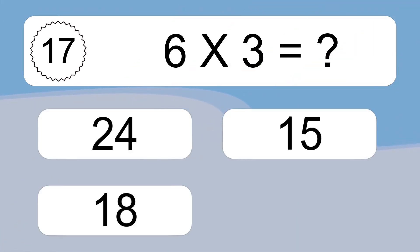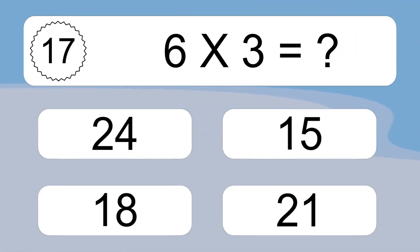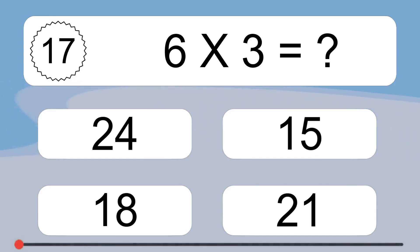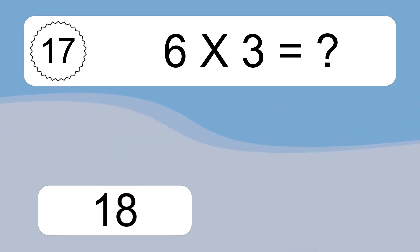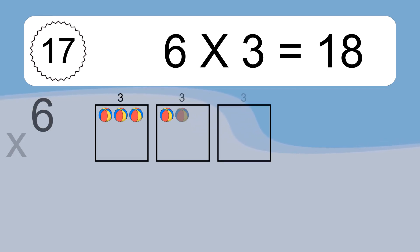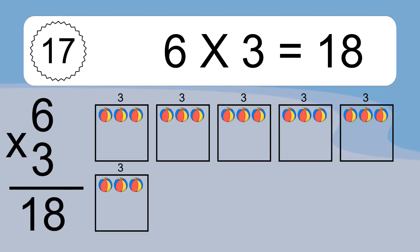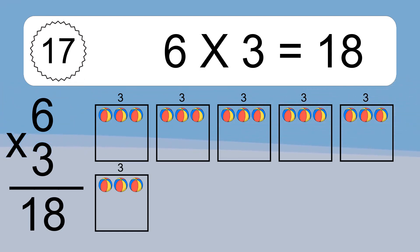6 times 3 equals what? 6 times 3 equals 18. We have 6 boxes, and each box has 3 colorful balls inside. If you count all the balls in all the boxes together, you will have 6 times 3 balls. This equals 18 balls.